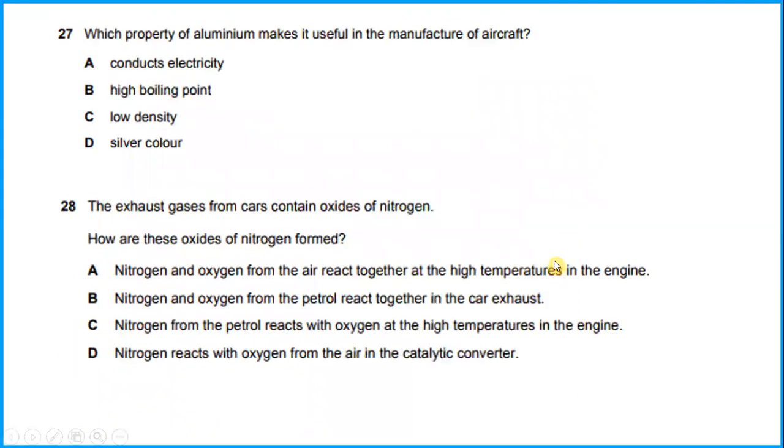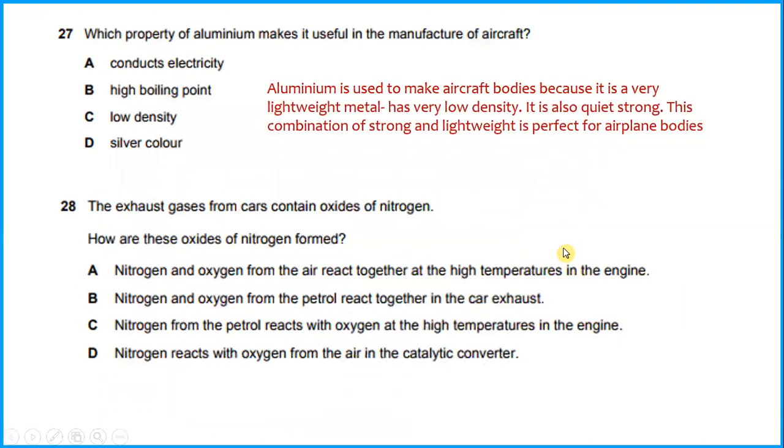Which property of aluminum makes it useful in the manufacture of aircraft? Aluminum is used to make airplane bodies because it is a very lightweight metal and has very low density, and it is also quite strong. This combination of strong and lightweight is perfect for airplane bodies. So the answer will be C.